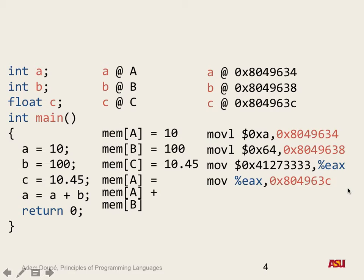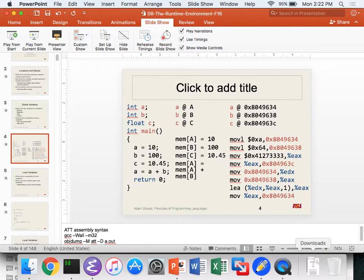One instruction moves the float value into a register first, then moves from the register into the memory address. Does every C instruction map one-to-one with assembly instructions? No. There's no guarantee — all we know is when you put a value in B, when you get it back later you get that same value. There's a one-to-one mapping for A=10 and B=100, but C=10.45 takes two instructions. A float value requires a special representation.